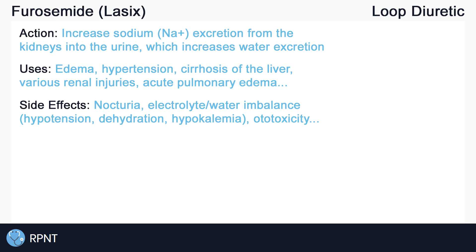Other important side effects of electrolyte and water excretion include hypotension, dehydration, and electrolyte imbalances such as hypokalemia. At very high doses, furosemide can also cause ototoxicity, which can manifest as tinnitus, hearing loss, and vertigo. High doses can cause a decrease in thyroid hormone levels as well.